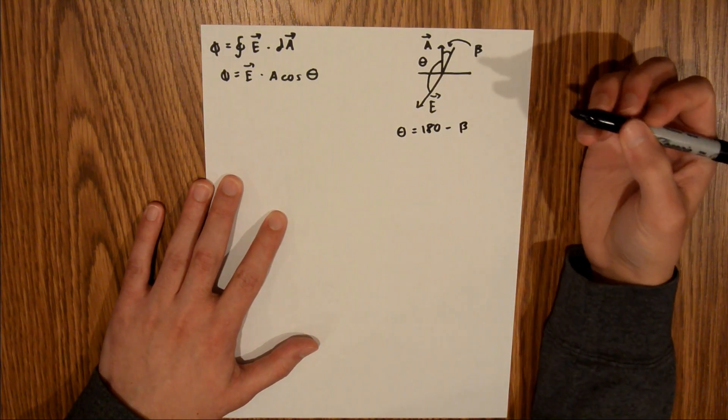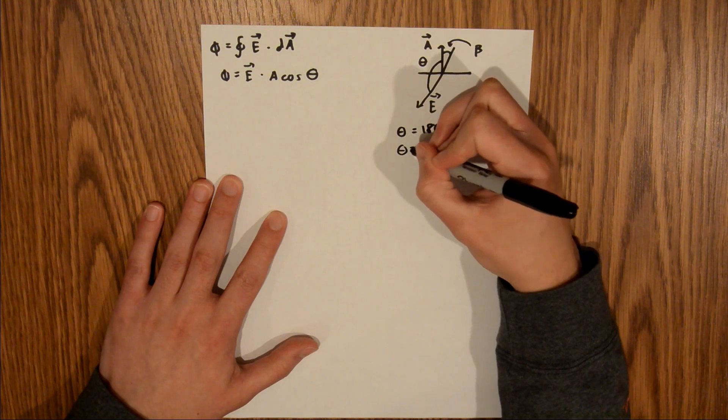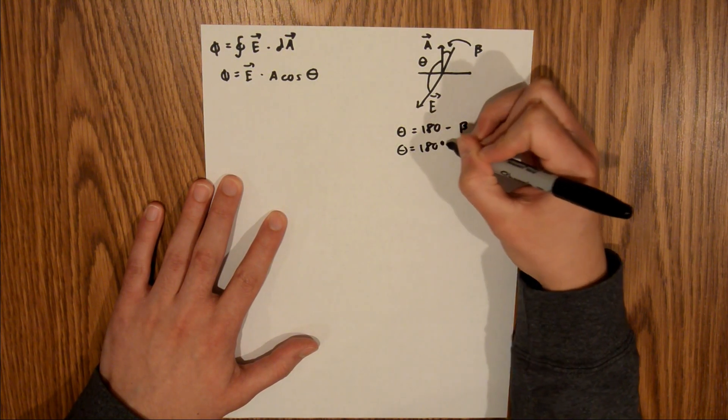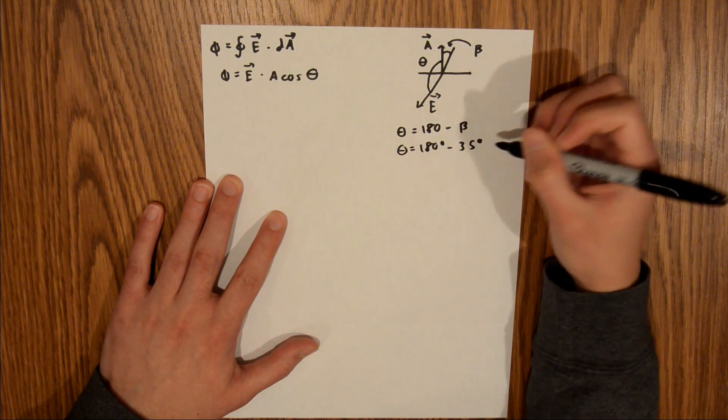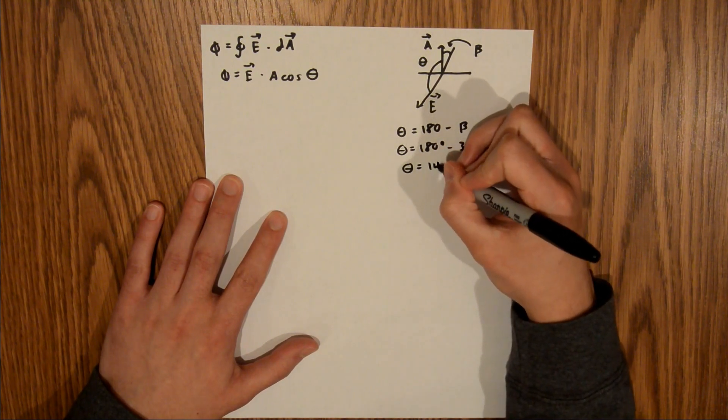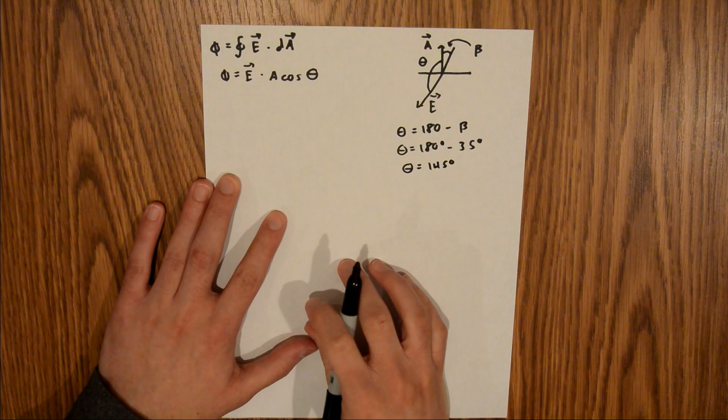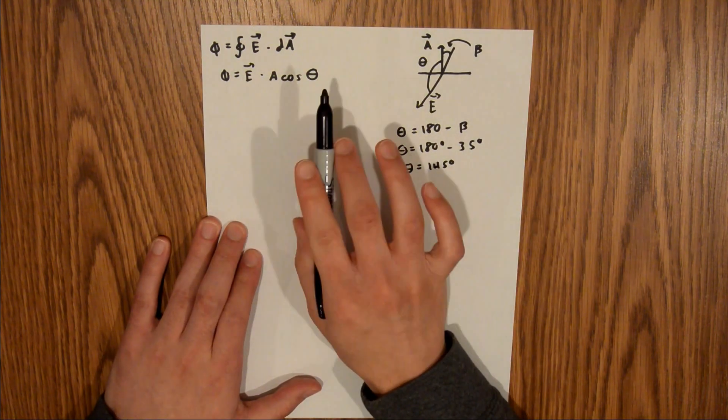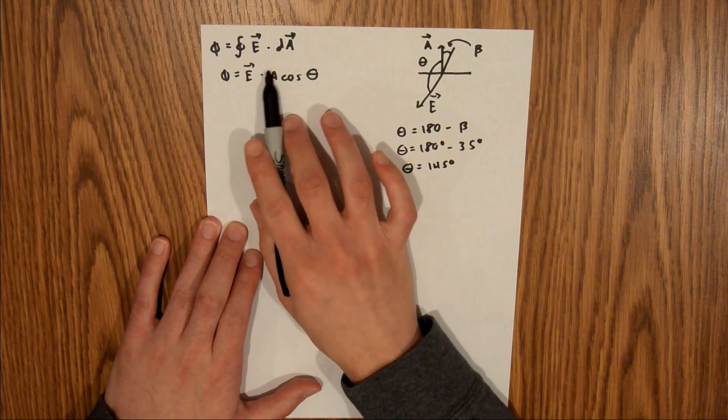In the problem, we're told that beta is 35 degrees. So theta equals 180 degrees minus 35 degrees, which equals 145 degrees. We're given the electric field in the problem, we just found theta, and now we need to find our area.